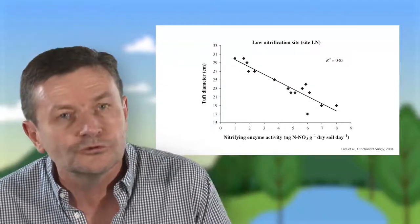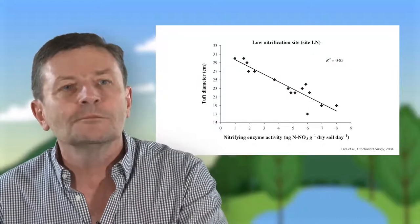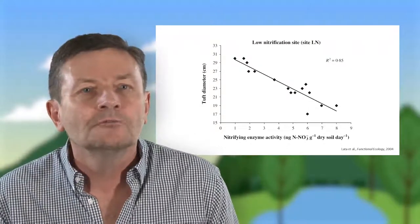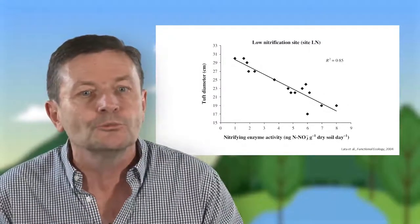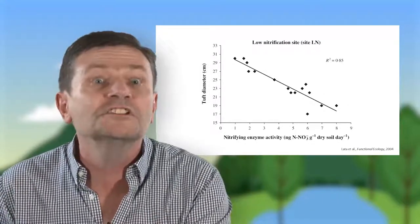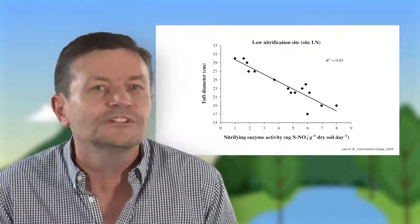Ici, on a un exemple, toujours dans ces savannes, où les plantes inhibent les bactéries qui fabriquent les nitrates. Vous n'avez quasiment pas de nitrates, et la droite qui est représentée ici vous montre que plus la touffe d'herbe est grosse, plus l'inhibition est forte. On a quasiment plus de nitrates dans ces sols.